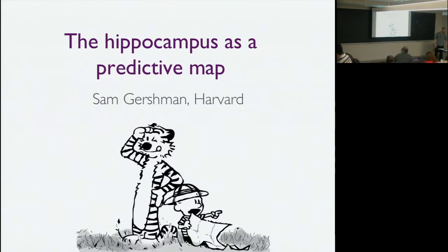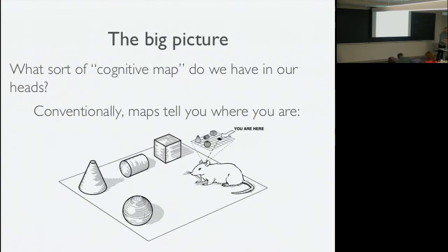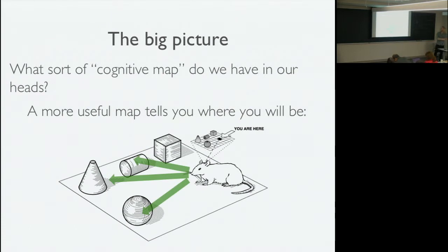I'm going to talk about the campus conservation map. The main question I want to answer is: what sort of cognitive map do we have in our heads? There's a seminal wisdom implicit or explicit in a lot of the talks you've already seen — that a map holds out where you are. I'm going to talk about a different sort of idea: a predictive map that's telling you where you will be.